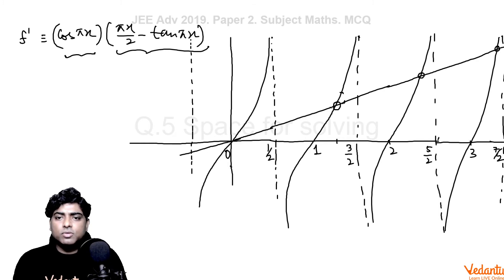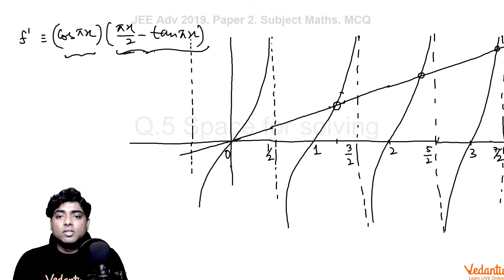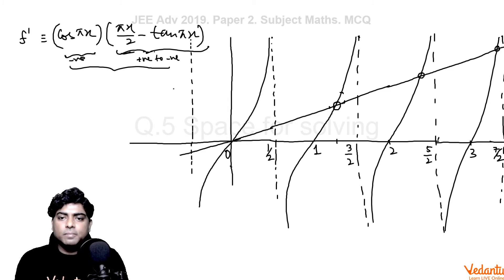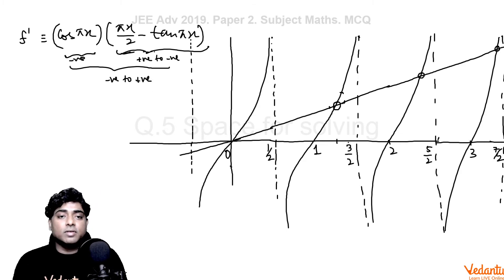Since cos(πx) is negative here and the second factor changes from positive to negative, the overall sign change of f'(x) at this first critical point is from negative to positive. This means this is a point of local minima for f(x) — it is the very first point y₁.